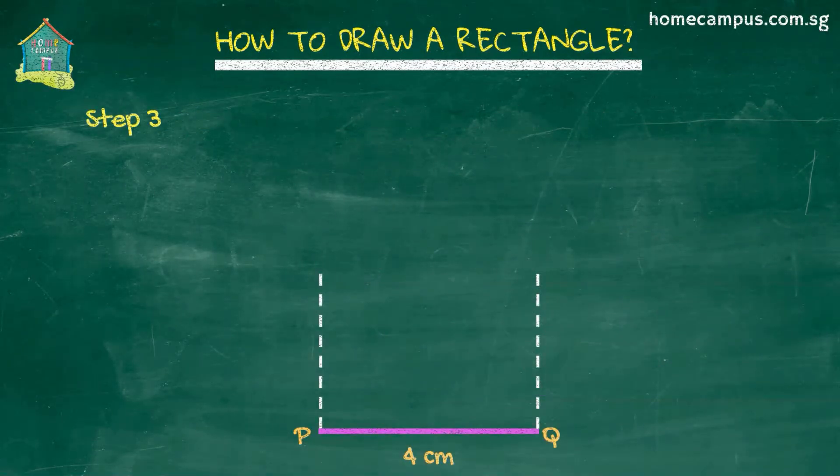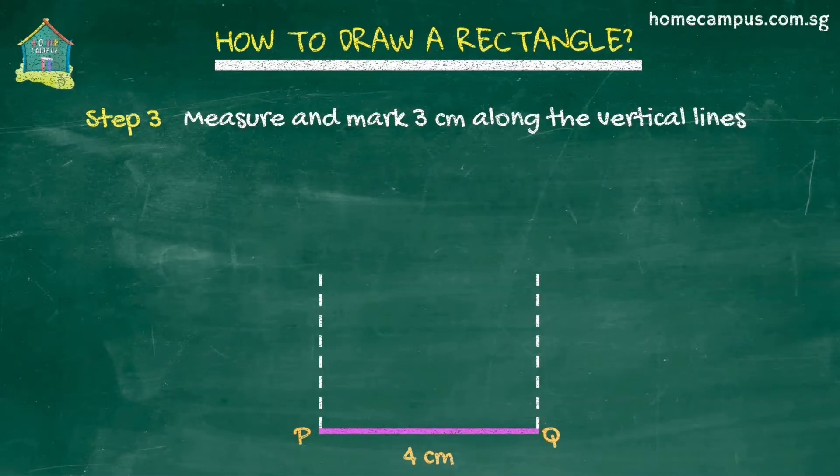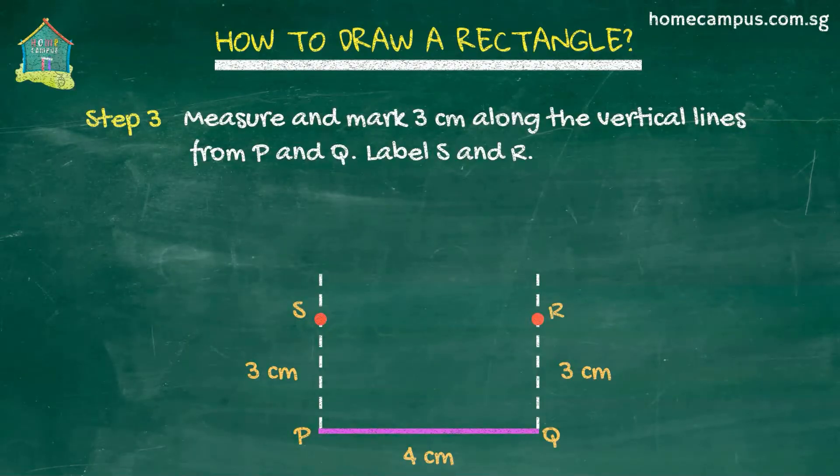Now, we use a ruler to measure and mark 3cm along the vertical lines from P and Q. We label them S and R.